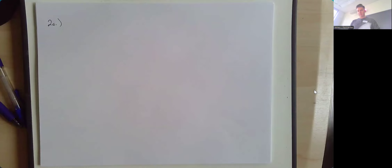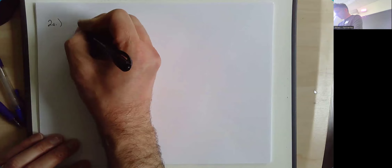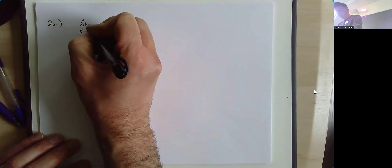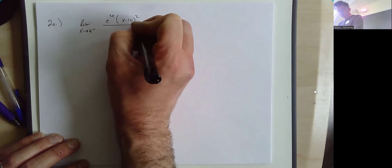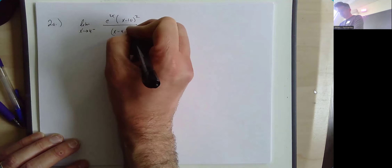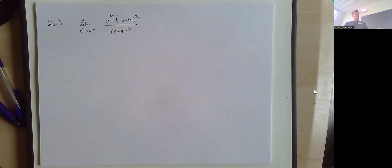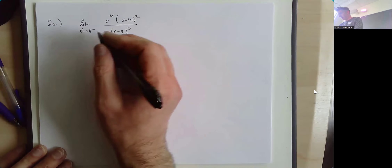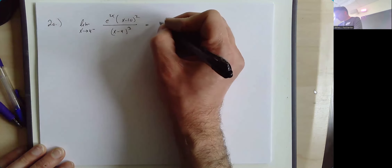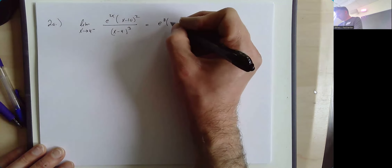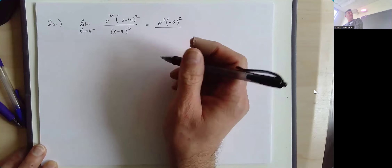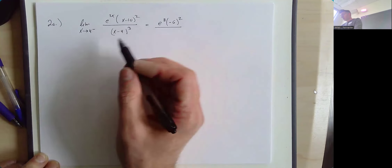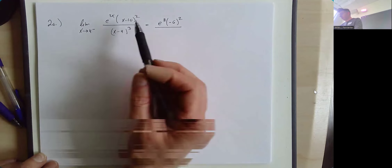Here we have the limit as x approaches 4 from the left of e to the 2x times x minus 10 squared, over x minus 4 cubed. The first thing we should always try with a limit is to plug it in. If I plug in 4, I get e to the eighth times 4 minus 10 squared on top. The denominator: a number slightly less than 4 minus 4 is slightly negative.